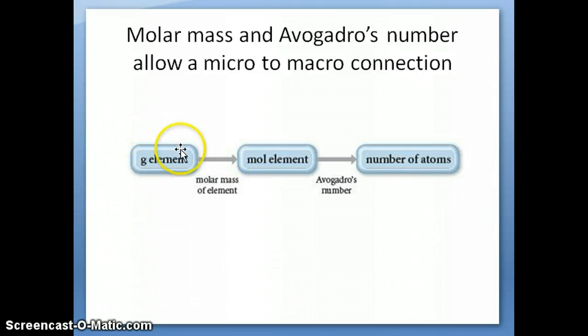If you have a certain grams of element and you want to convert it to how many atoms of that specific element you have, you're going to need these two conversion factors. The first thing you need to do is take that mass and convert it to number of moles. This is important because only by using number of moles can you convert that into atoms.